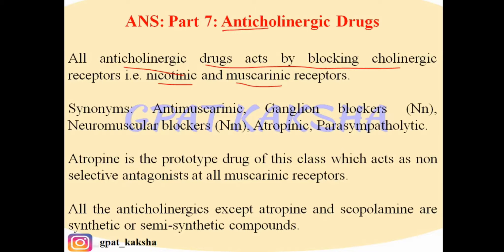Synonyms of anticholinergic drugs include: anti-muscarinic, as they act against muscarinic receptors; ganglion blockers, which act as antagonists at nicotinic NM receptors; neuromuscular blockers, which act as antagonists at NM receptors; parasympatholytic, as these drugs produce the opposite effect of the parasympathetic system; and atropinic, meaning having actions similar to that of atropine.